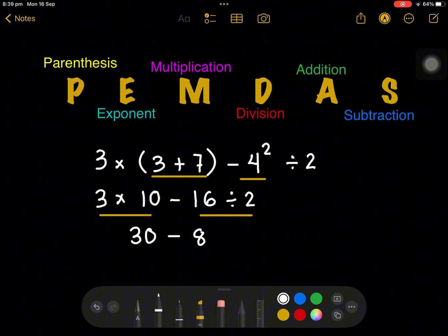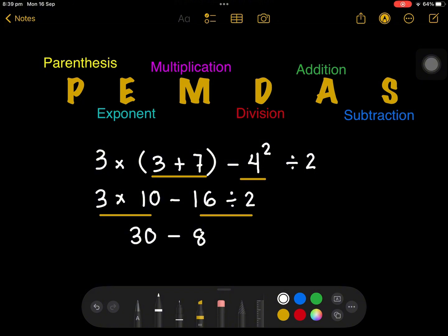And then simplify, 30 minus 8 is equal to 22. And that is the answer when you simplify this order of operations.